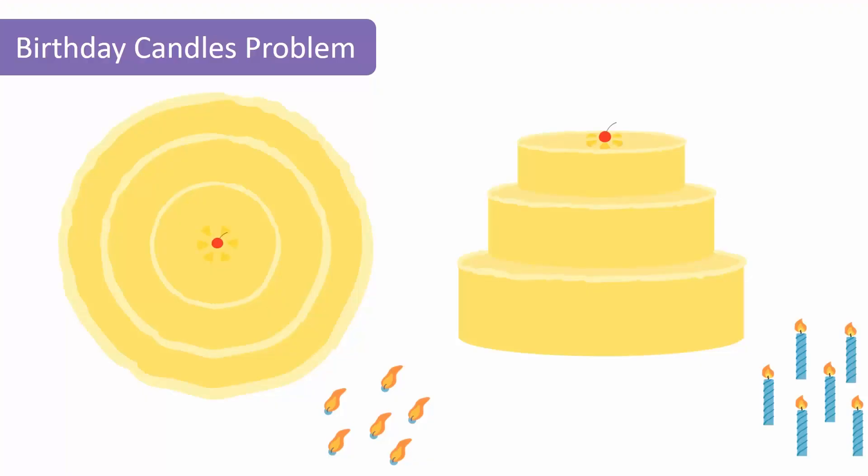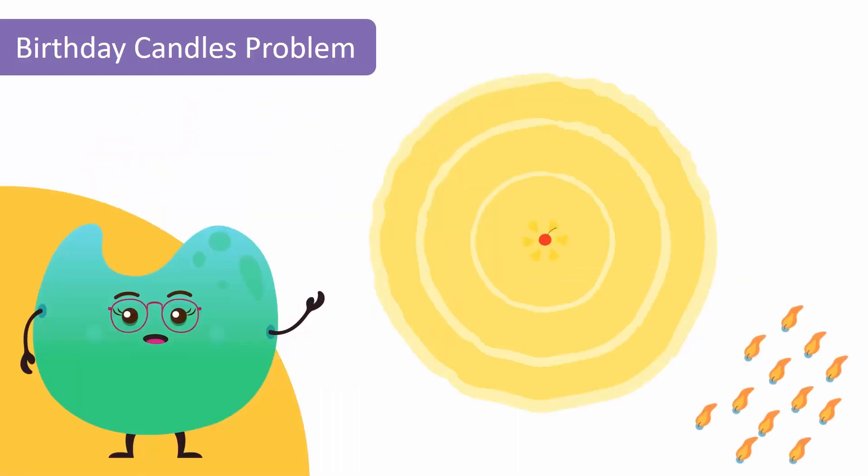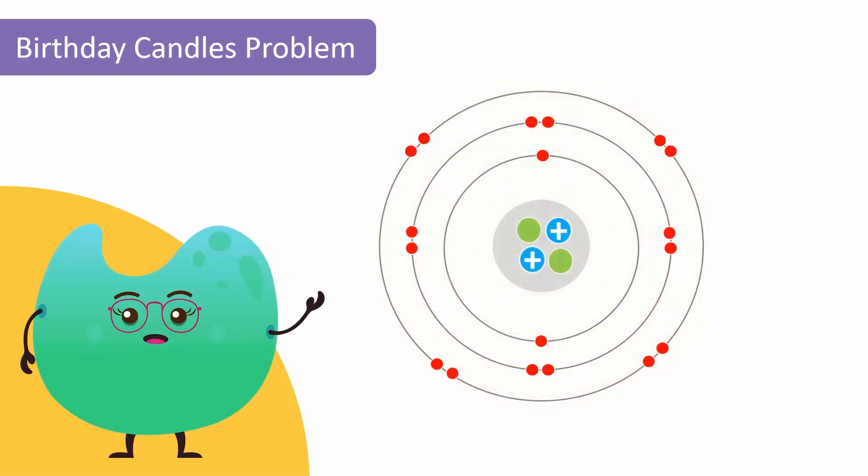Look at this three-level birthday cake and imagine that you have to arrange candles on it. Will you put all the candles on one level? Of course not. You will distribute the candles over different levels. In the same way, electrons are arranged on different levels in an atom.